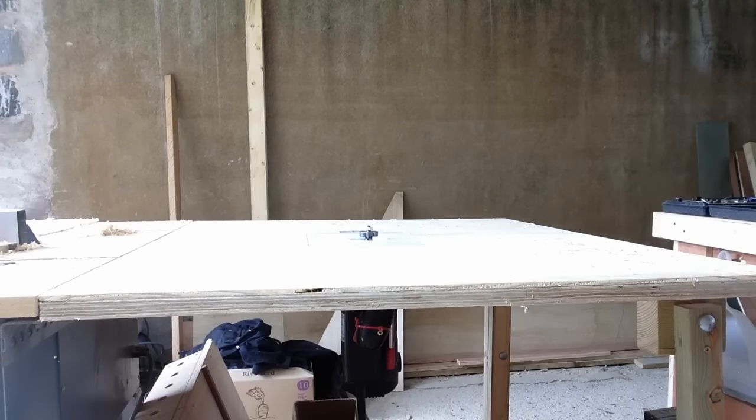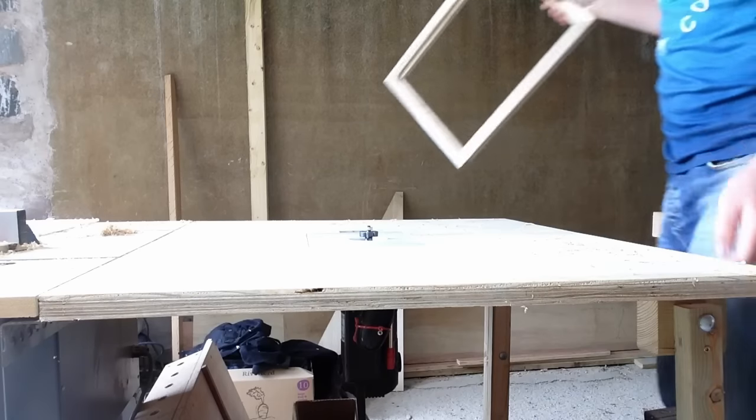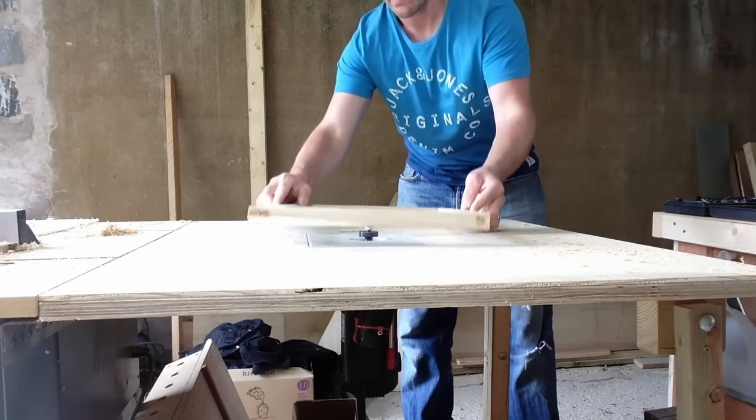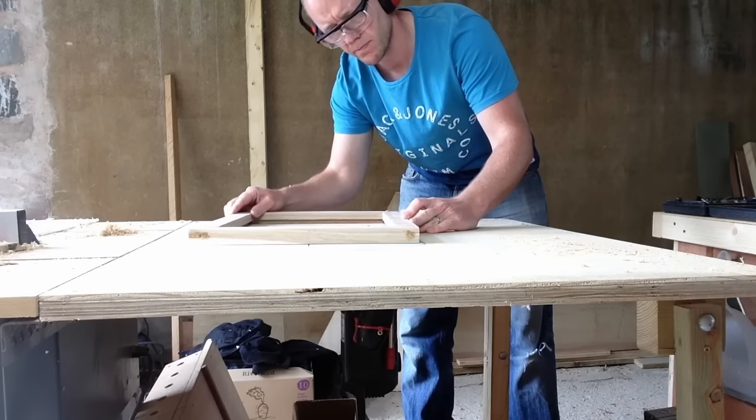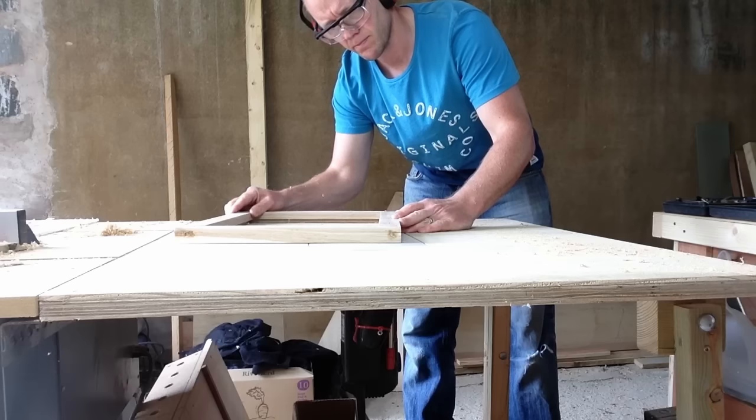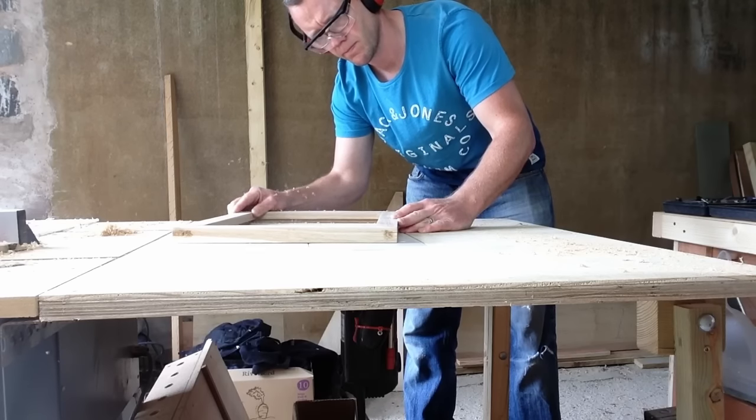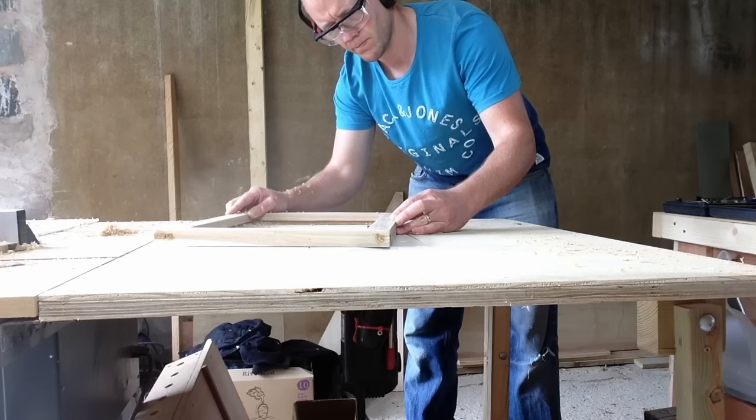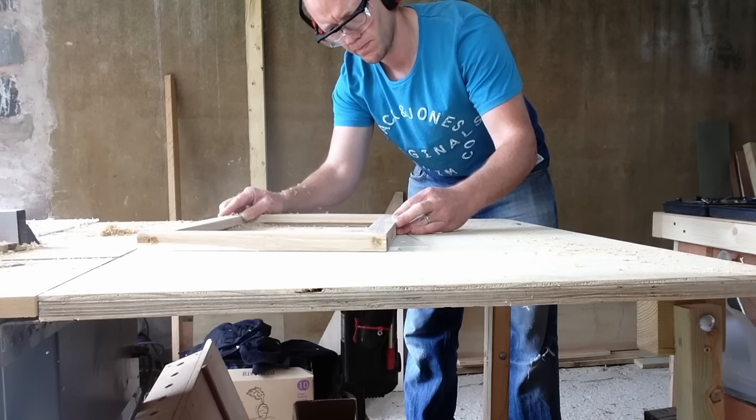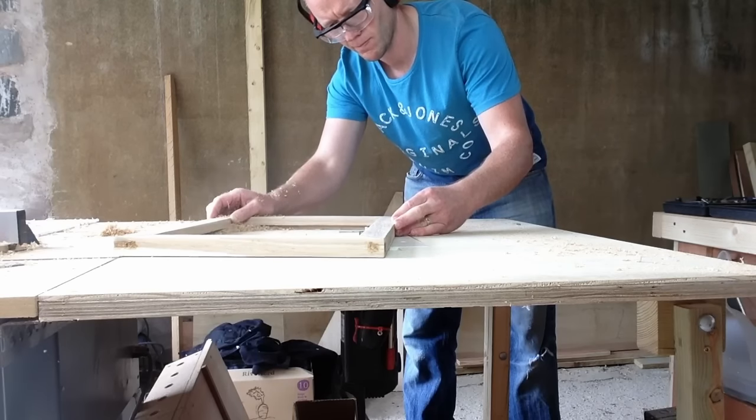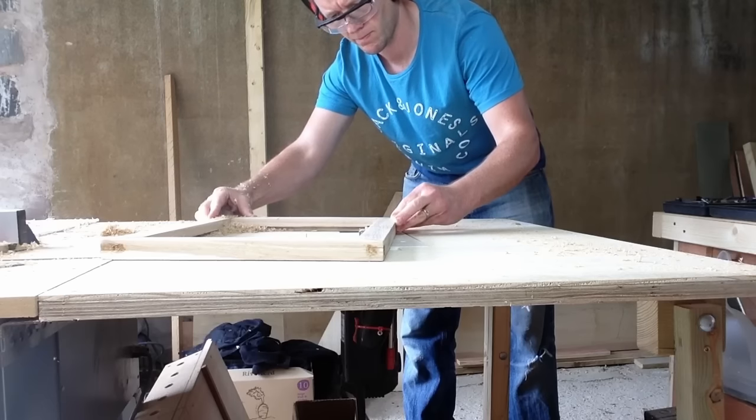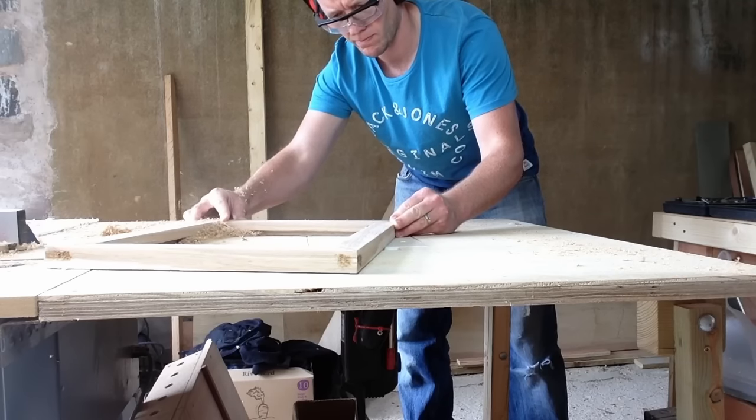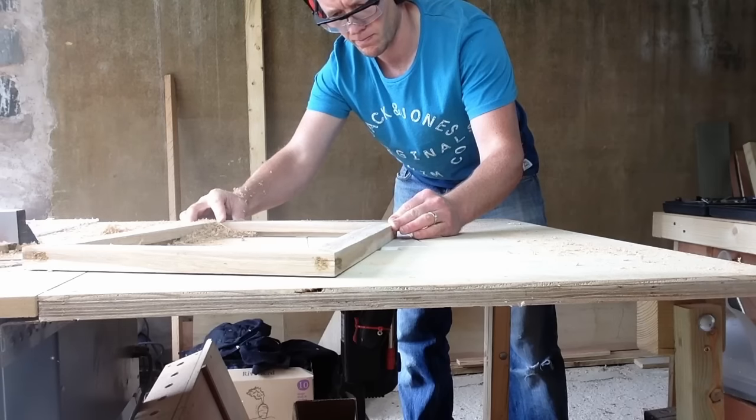Now just to put the rebate in the back of the frame to take the acrylic sheet and the picture in the back of the frame. Just to round it out. Just set it up and I made three passes all the way around the frame within the back of the frame.